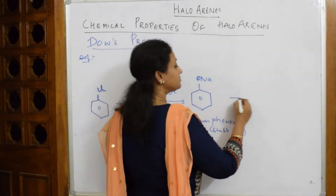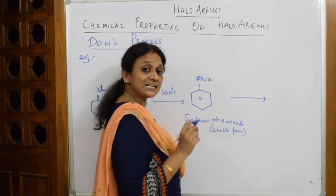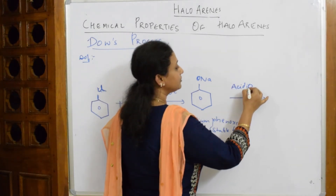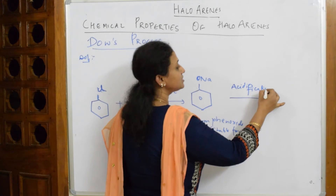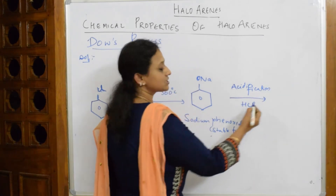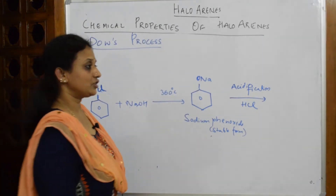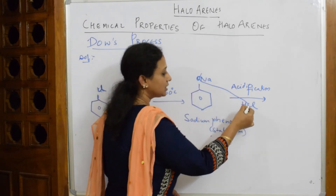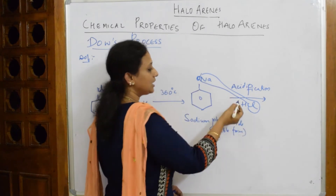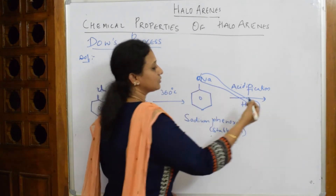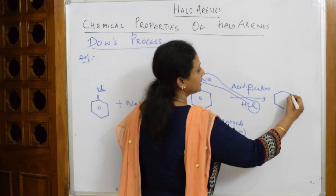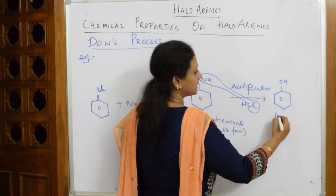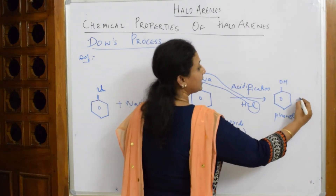Now, to this sodium salt, we are going to perform an acidification reaction. Acidification means you are going to add HCl to this. When you add HCl, observe carefully — your NaCl comes out and the OH is going to shift here. The product I get is phenol and NaCl.